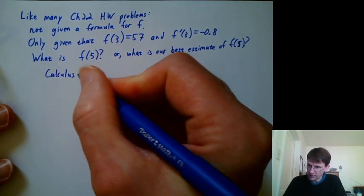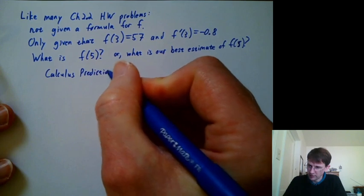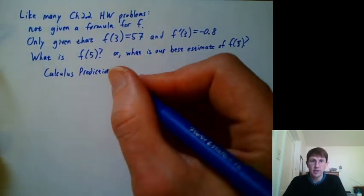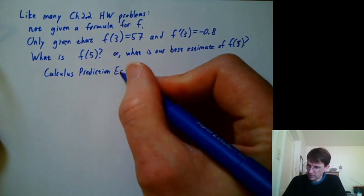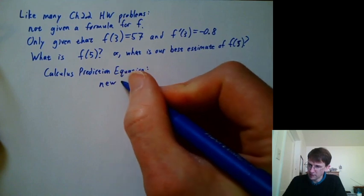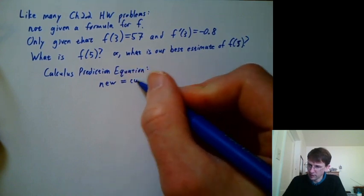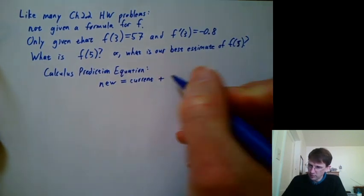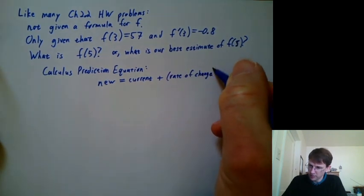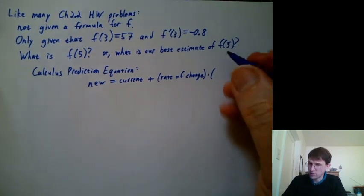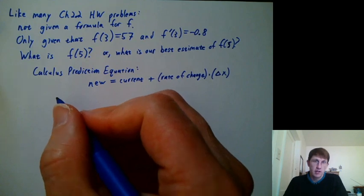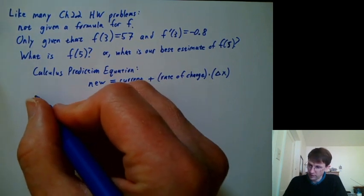I keep saying it's the calculus prediction equation because in stats, we use other prediction equations, trend lines, basically. So we've said the calculus prediction equation is new equals current plus rate of change times the change in time, or delta x, you could say. Another way of thinking of it is a tangent line or a best local linear approximation.